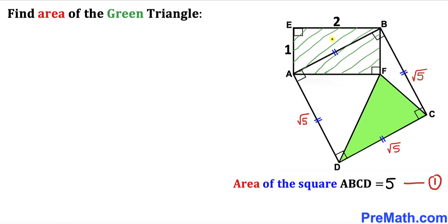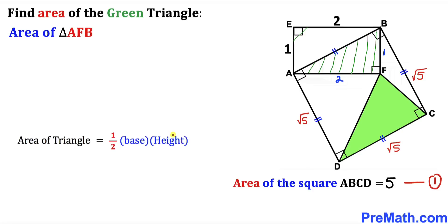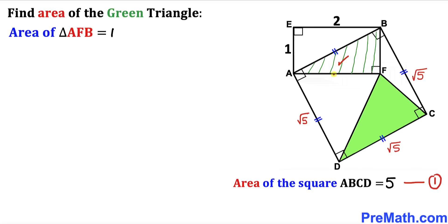Now let's focus on rectangle AFBE. Since it's a rectangle, opposite sides are equal: one pair of sides is 1 unit and the other pair is 2 units. We'll calculate the area of right triangle AFB. Using the area of a triangle formula — one half times base times height — our base is 2 and height is 1, giving us one half times 2 times 1, which equals 1. So the area of triangle AFB is 1 — let's call this equation 2.